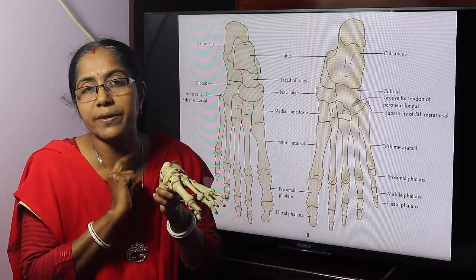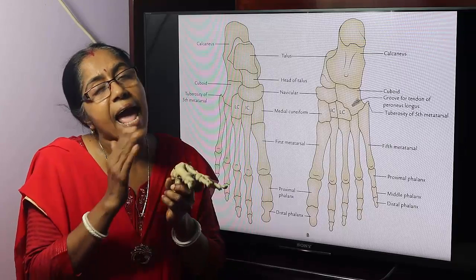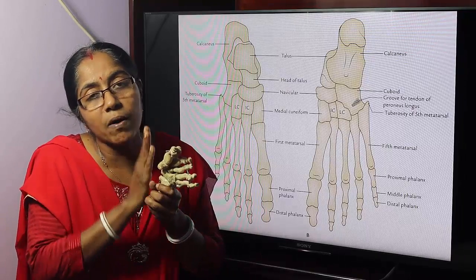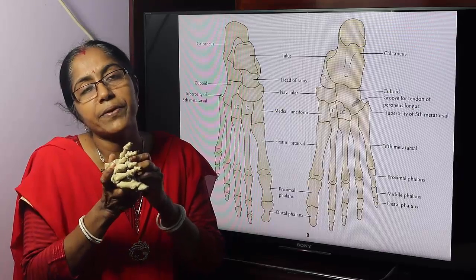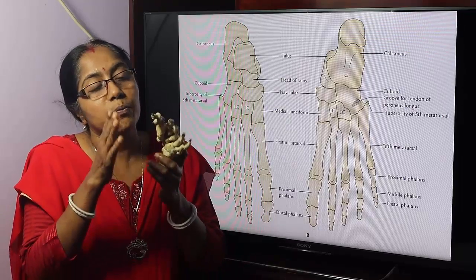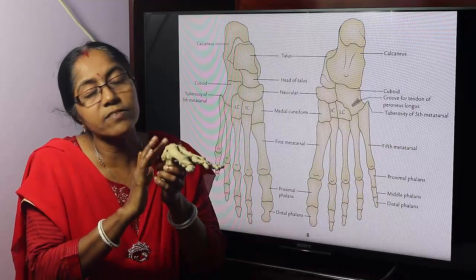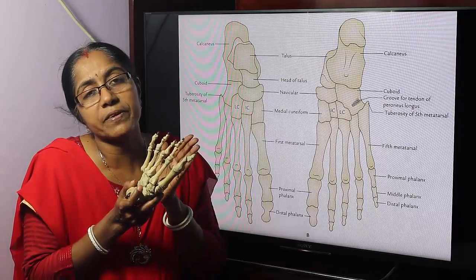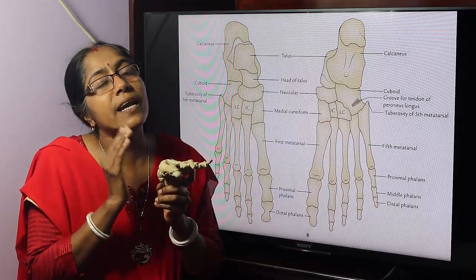Inversion is a movement in which the medial border of the foot is raised and the sole is directed medially. Eversion is a movement in which the lateral border of the foot is raised and the sole is directed laterally. Inverters: mainly tibialis anterior and tibialis posterior, assisted by flexor hallucis longus. Everters: peroneus longus and peroneus brevis, assisted by peroneus tertius.